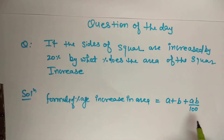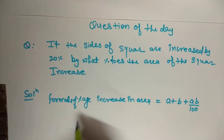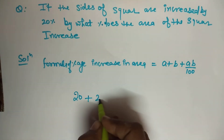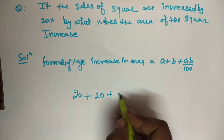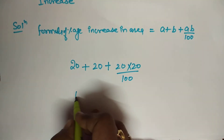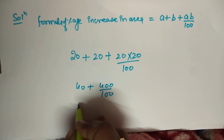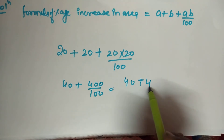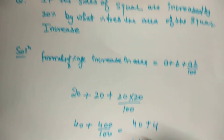Ye formula bhi aapko rathne ki zarurat nahi hai. Jitni increase sides mein given hai, 20% increase ho raha hai: 20 plus 20 plus 20 into 20 upon 100. That gives 40 plus 400 upon 100, which is equal to 40 plus 4, equal to 44%.